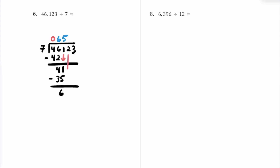Let's bring this 2 down so we now have 62. How many times does 7 fit into 62? 7 times 7 is 49, 7 times 8 is 56, and 7 times 9 is 63 which is just a little too much. So let's go with an 8. 8 times 7 is 56, and 62 minus 56 leaves us with 6 here.